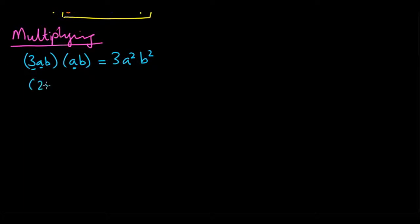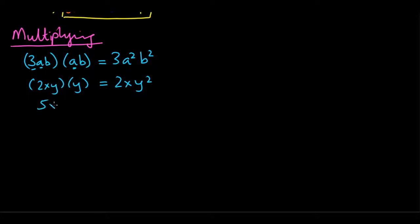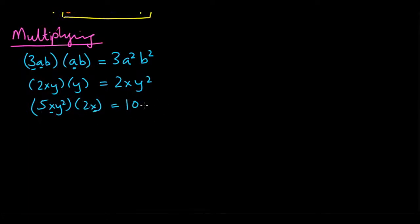Let's look at some examples. 2xy times y — only y is being multiplied, so this gives 2xy squared; the 2x is unaffected. Another example: 5xy squared times 2x. The constants give 5 times 2 = 10. There's one x here and one x there; bases are the same so powers are added, giving x squared. The y squared stays as y squared. So the answer is 10x squared y squared.